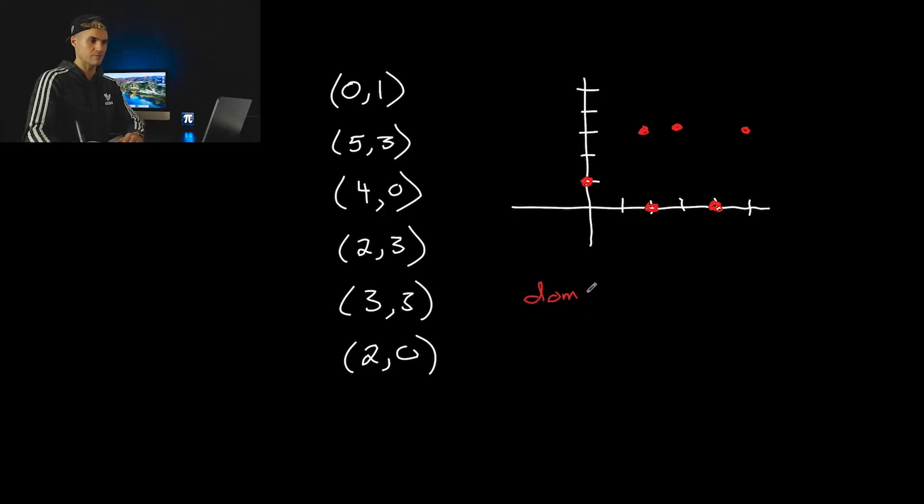So now domain. Now, unlike the other one, it's not listed out in a nice order for us, so we have to kind of look through. So what is the smallest x value going to be? It's going to be zero. Next one's going to be two. Notice two repeats twice, but we only write it once. And then we have three, four, five, like that.